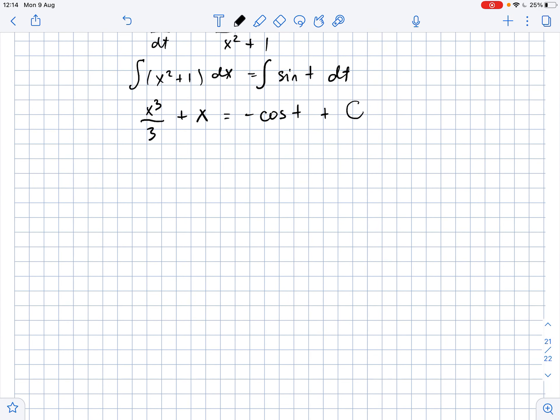where c is arbitrary constant. And then x squared of t over 3 plus x of t equals negative cosine of t plus c.